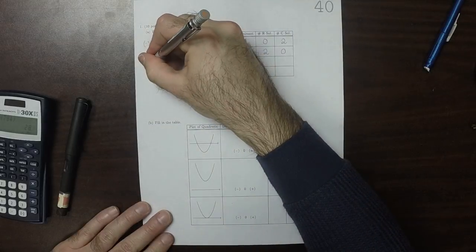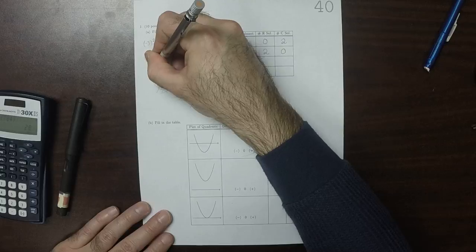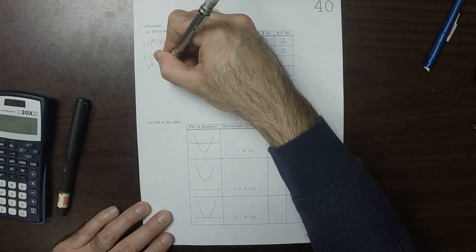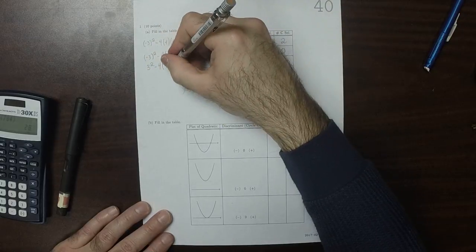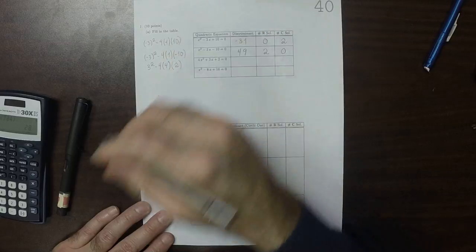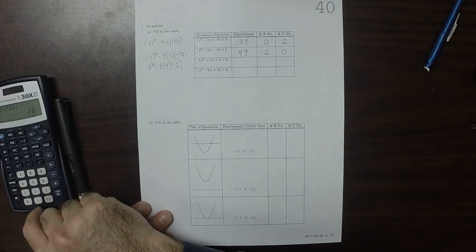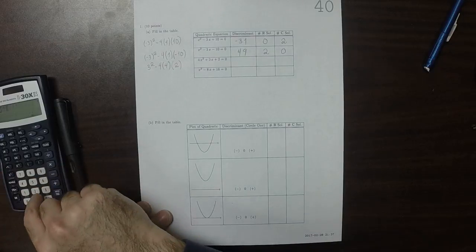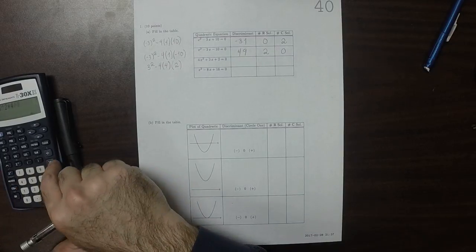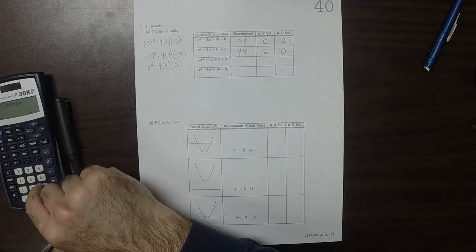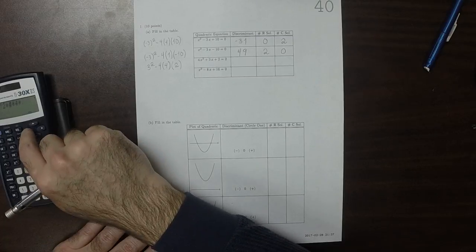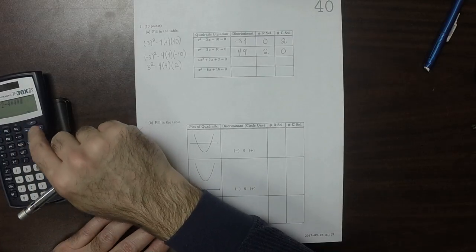So for this one, 3 squared minus 4 times 4 times 2. Type that into the machine here. So that would be 3 squared minus 4 times 4 times 4 times 2.